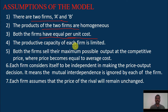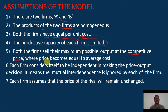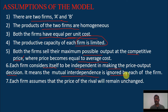The productive capacity of each firm is limited. Both firms sell the maximum possible output at the competitive price, where price becomes equal to average cost. Each firm considers itself to be independent in making the price-output decision, meaning mutual interdependence is ignored, as in Cournot's and Bertrand's models.